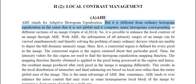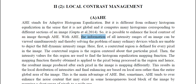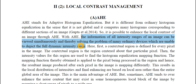AHE computes many histograms corresponding to different sections of an image. It works on a window-to-window based calculation, so it is possible to enhance the local contrast of an image through AHE. With Adaptive Histogram Equalization, the information of all intensity ranges of an image can be viewed simultaneously, thereby solving the problem of many ordinary devices which are unable to depict the full dynamic intensity range. The main benefit is that you can utilize the full dynamic intensity range.